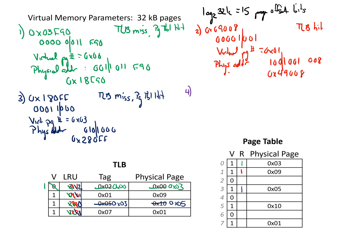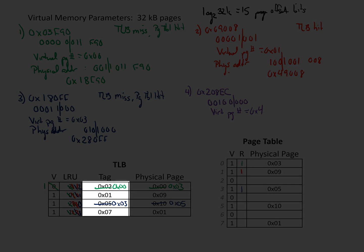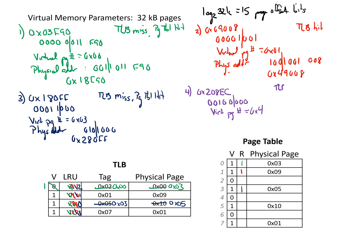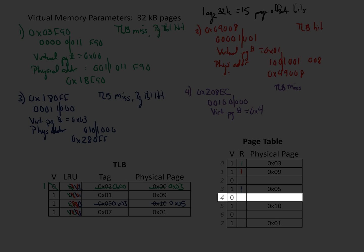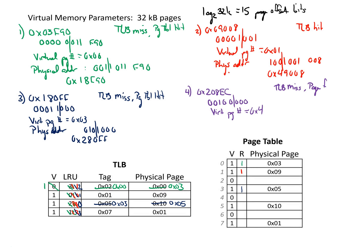For the last example, we're going to look at address 0x208EC. We break apart the two most significant hex digits into binary — 0, 0, 1, 0, 0, 0, 0, 0 — and get rid of the three least significant bits, finding that our virtual page number equals hex 4. We look in our TLB and none of the tags match 4, so we have a TLB miss. We then go look in the page table at entry 4 and see that it's invalid, meaning we also have a page fault. We need to bring something into the page table — we need to page something in.